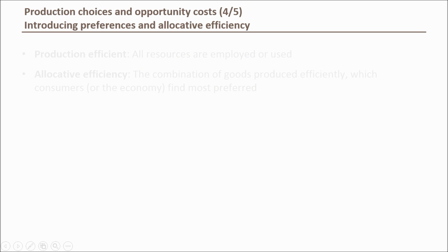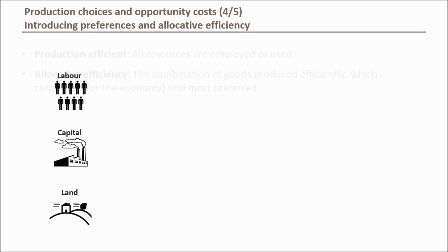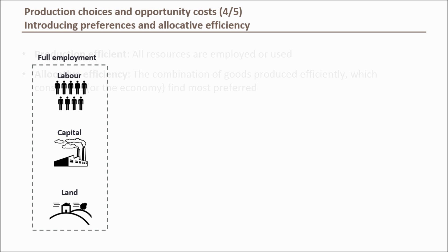Let's continue using our simple two-good economy and assume all productive resources such as labour, capital, and land are fully employed. By assuming full employment we know that any production combination chosen will be production efficient, with those combinations forming the PPF line.